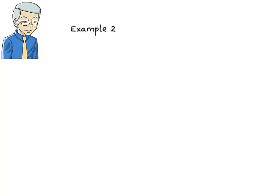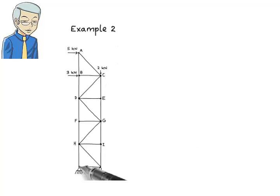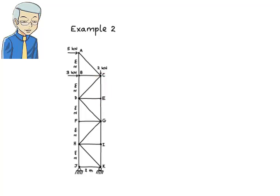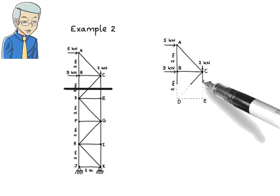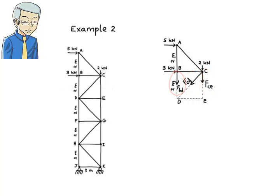Example 2. This example illustrates the convenience of using the method of sections for finding one member force at a time. Say we wish to determine the force in member CE. Here we can determine the unknown force without needing to calculate the support reactions. Further, we only need to use one equilibrium equation — the moment equation — for this purpose. The free body diagram for the top substructure shows three unknown forces: FCE, FCD and FBD. But we're interested in calculating FCE only, so it makes sense to use one equation in which FCE is the only unknown.